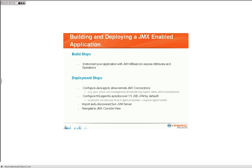I will go through a brief example of how you would actually go about building and deploying a JMX-enabled application. The first thing you will need to do is instrument your application in order to register MBeans with the JVM's MBean server, so you can expose attributes and operations that are of interest. I have an example here that I developed for the demo, and I can show you how you would go about doing that.